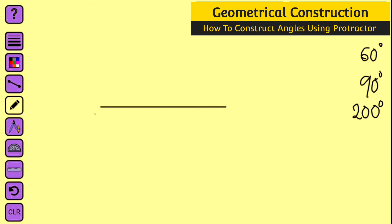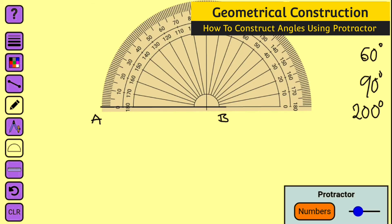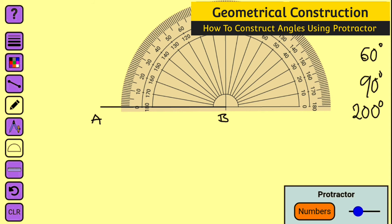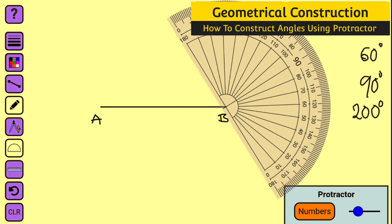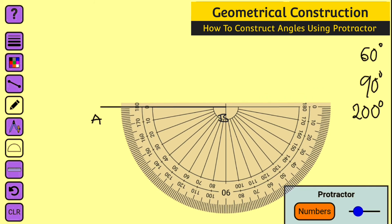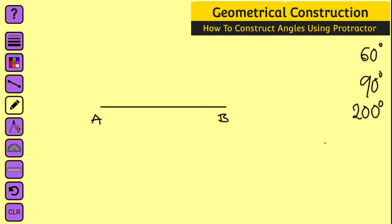This is a straight line — let me label it as A and B. This time around I am going to construct the angle at point B. Let me bring my protractor and place it on point B. You can see that this straight line is 180 degrees, but we need 200, so we need 20 extra degrees. What we are going to do is flip the protractor upside down to add 20 extra degrees. Now we are going to count clockwise 20 degrees and place a dot there.